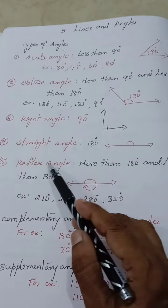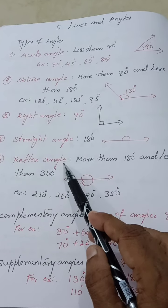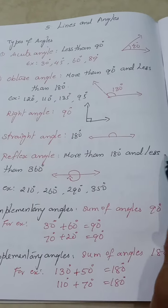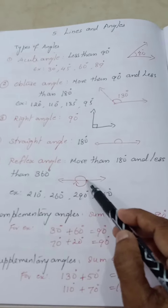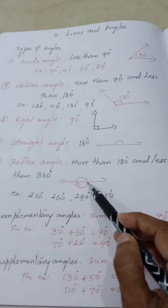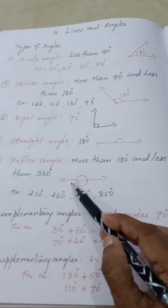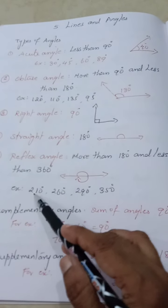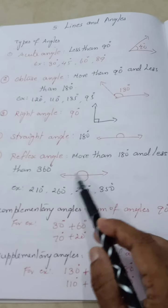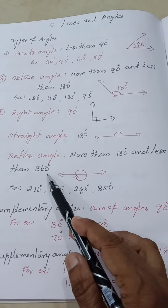The fifth type is the reflex angle. A reflex angle is more than 180 degrees and less than 360 degrees. So the angle between 180 and 360 is called a reflex angle. You can write values from 181 to 359 degrees.